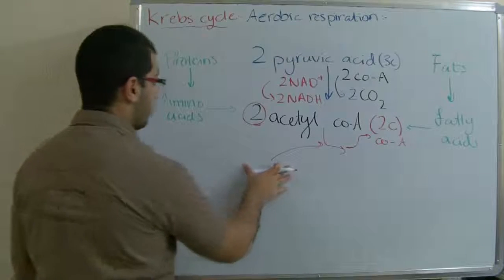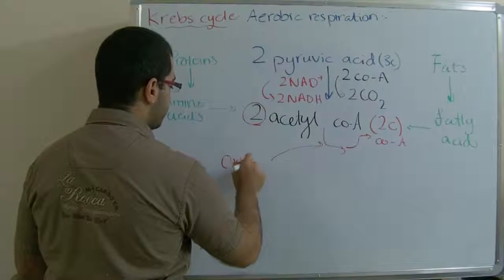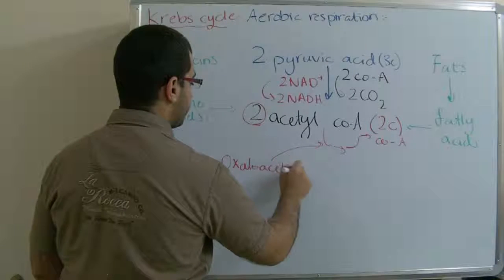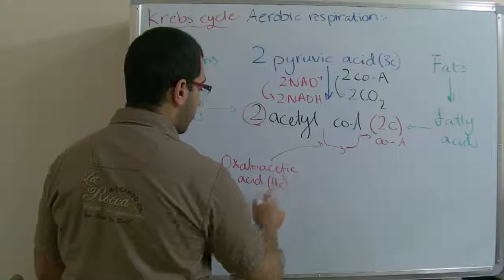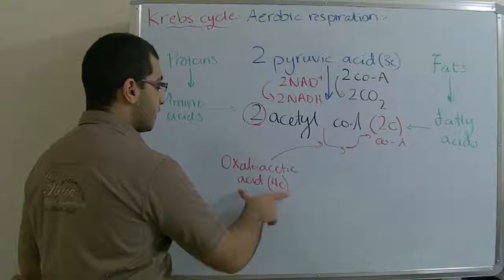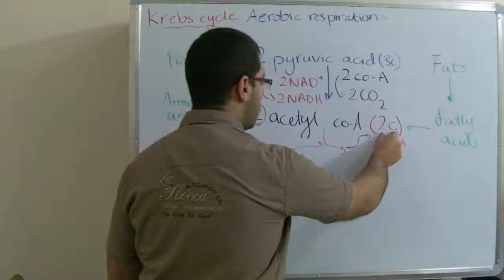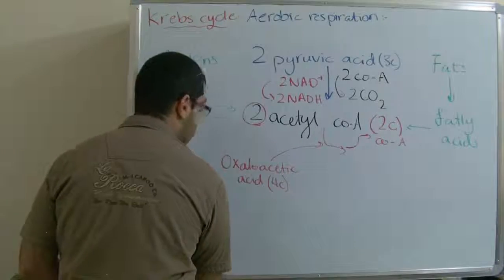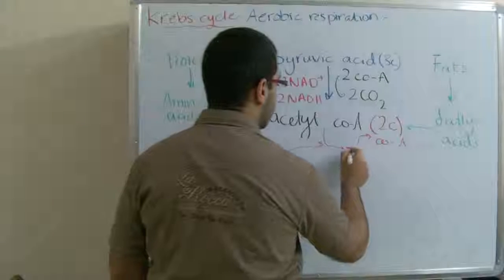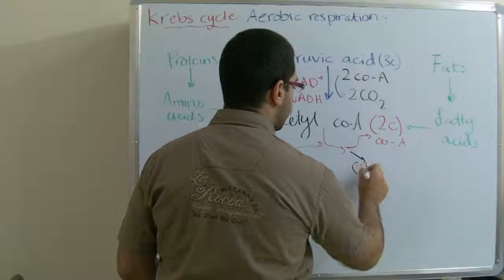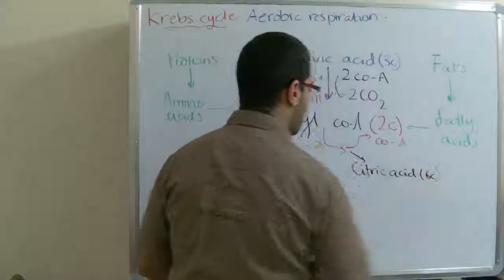When it enters the cycle, a compound here is waiting for it and this is called oxaloacetic acid. This has a carbon content of four molecules. So four molecules of carbon joining two molecules of carbon will yield a six carbon compound which is the citric acid with six carbon atoms.